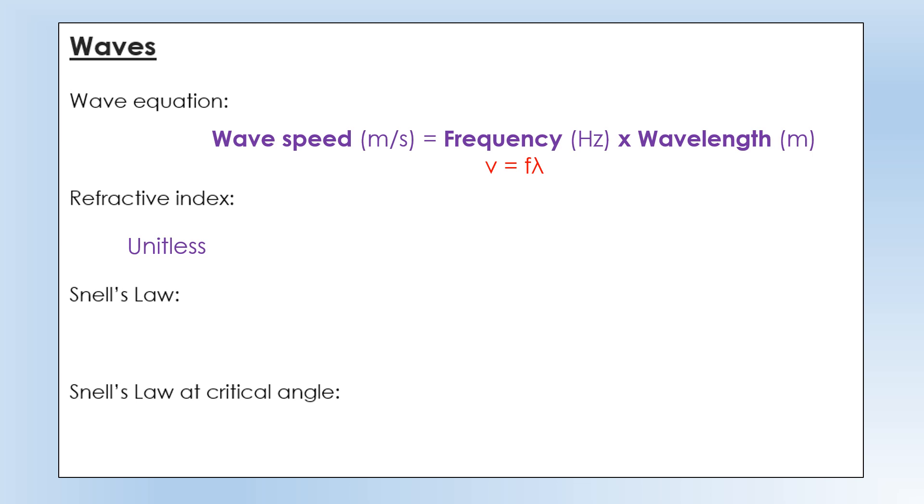Refractive index, which doesn't have a unit, it's unitless. The reason being is it's the speed divided by speed, so the units cancel out. It's the speed of light in a vacuum divided by speed of light in a medium. Speed of light in a vacuum being 3 times 10 to the 8th. So that's something you should know.